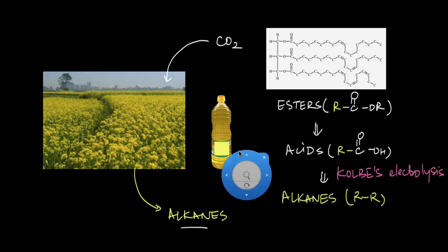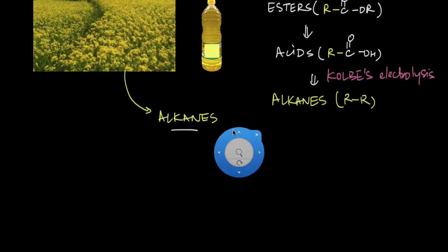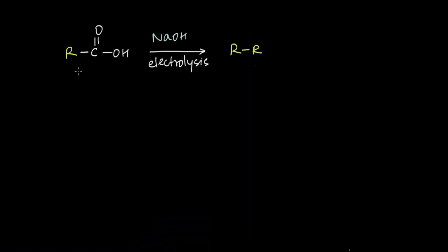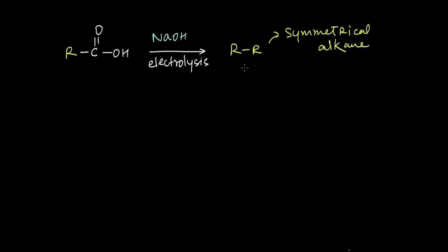What Kolbe's electrolysis does is convert an acid — in which we have an alkyl group attached — into a symmetrical alkane. This process was first described by Herman Kolbe in the late 1850s, so we have known about it for quite some time. So how do we carry out this electrolysis?